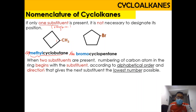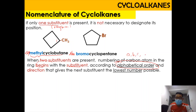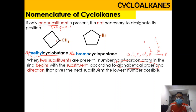However, when two substituents are present, numbering of the carbons in the ring begins and we assign numbers based on alphabetical order. The substituent with the smaller alphabetical order takes number 1. For example, E comes before M in the alphabet, so ethyl takes number 1 and methyl takes number 2. We must give the lowest number to the substituent that comes first alphabetically.